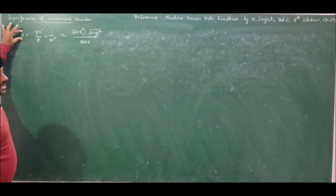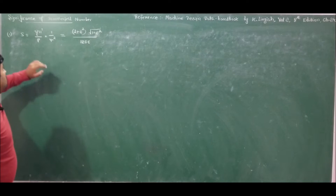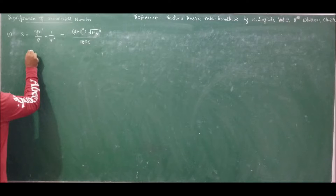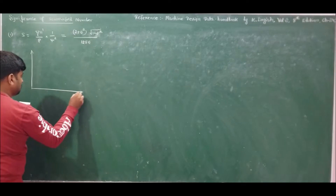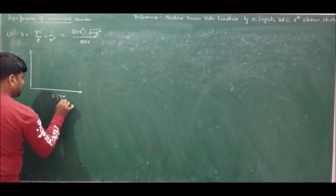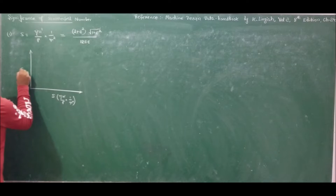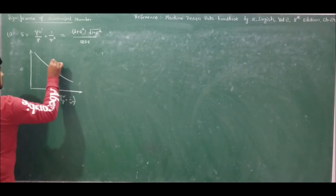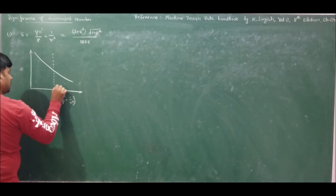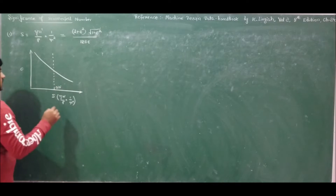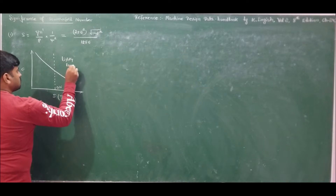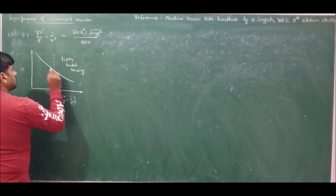Clearly, the bearing characteristic number is a function of attitude or eccentricity ratio alone. Therefore, if we plot Sommerfeld number versus eccentricity ratio — a plot of ε vs. S = (η·n'/p) × (1/ξ²) — we obtain a graph showing a separation between heavily loaded bearings and lightly loaded bearings at S = 0.15. This bisection gives us the region for lightly loaded and heavily loaded bearings.